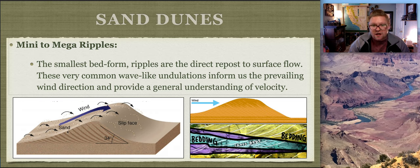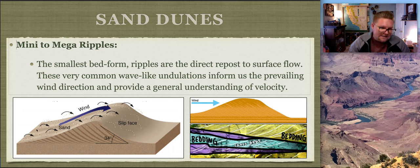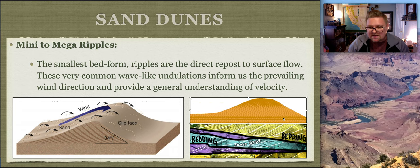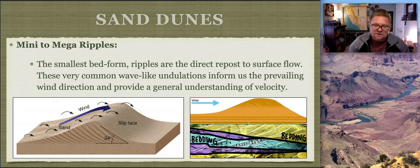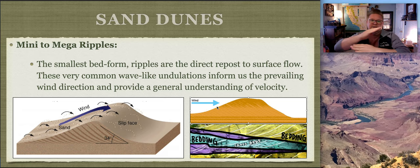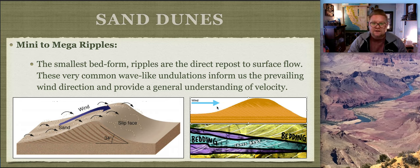Sand dunes have two dominant sides: the stoss (windward) side and the leeward side, known as the slip face or sheltered side. As sand moves it creates layers that accrue from incoming material. An animation shows wind taking sand from one side and redepositing it on the other creating new lines. Cross-bedding at Zion National Park shows sand blowing one direction dominantly, then reversing, creating layers going in opposite directions indicating environmental change.